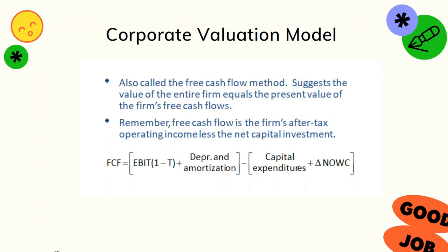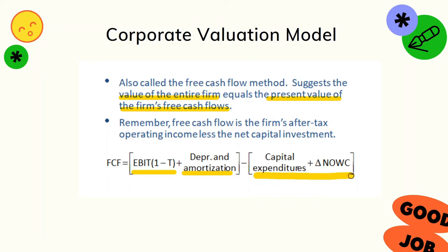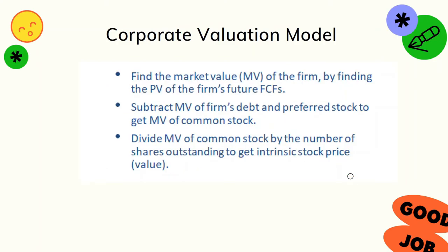This section shows how to apply the discounted dividend approach to value whole corporations using the corporate valuation model. We find the present value of future free cash flow (FCF). FCF is calculated as: net operating profit after tax plus depreciation and amortization, minus investment in fixed assets and investment in net operating working capital. When we find the present value of future FCF we get the market value of the whole firm; we then subtract the value of debt and preferred stock to arrive at the value of common equity.